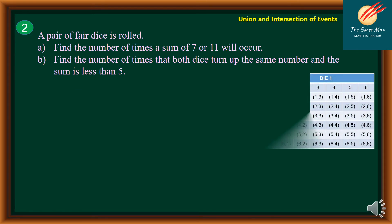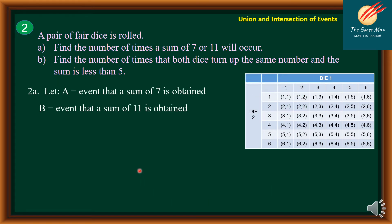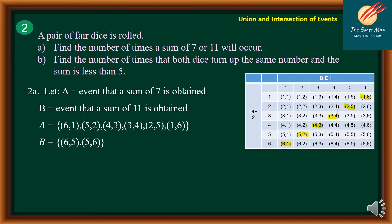Looking at our table to find the events where the sum equals 7: we have (6,1), (5,2), (4,3), (3,4), (2,5), and (1,6) — so 6 events in all. Next, to obtain B, which is the event that a sum of 11 is obtained, we list those events: we have (6,5) and (5,6) only, so 2 events.